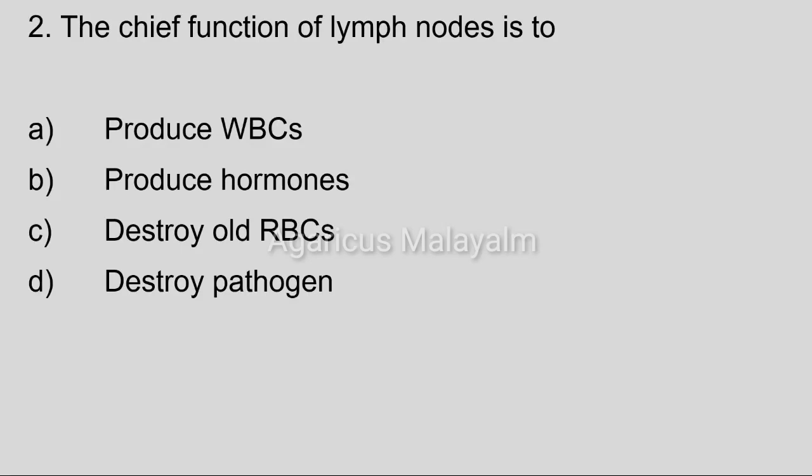Second question: The chief function of lymph nodes is — Option A: produce WBCs, Option B: produce hormones, Option C: destroy old RBCs, Option D: destroy pathogens. Correct answer: Option D, destroy pathogens.